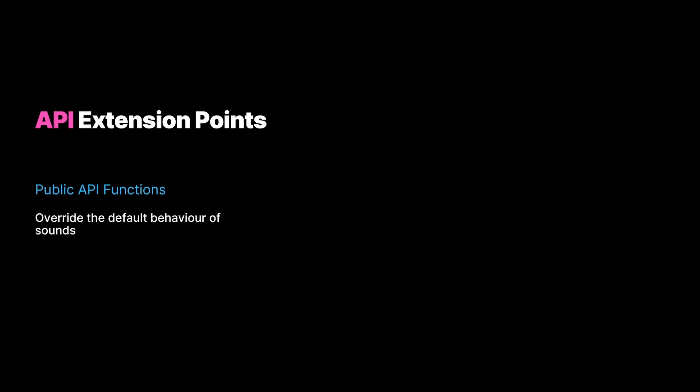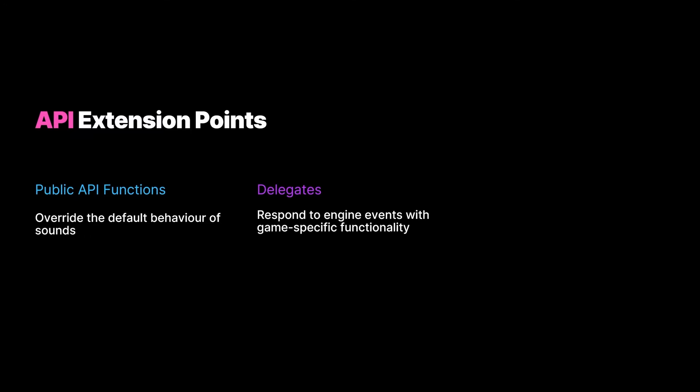Starting with public API functions: these allow you to call into the engine and change its default behavior or affect what it's doing at any time that suits you. A good example is setting source effect chains on active sounds — you can also manually set submixes. Then there are delegates, which allow you to handle events triggered by the engine just in time as they happen. This lets you append extra behavior to engine actions, rather than polling state to find out when things have changed.